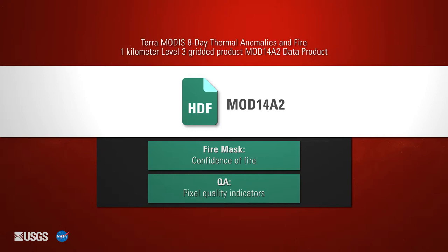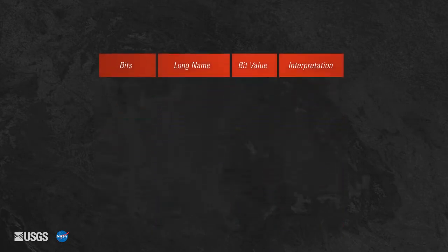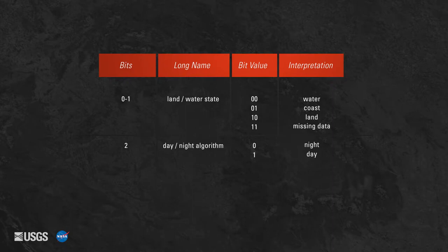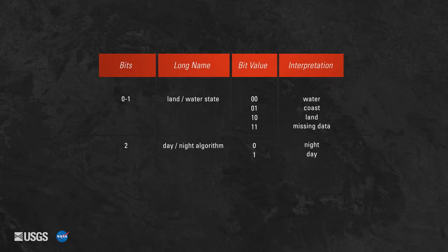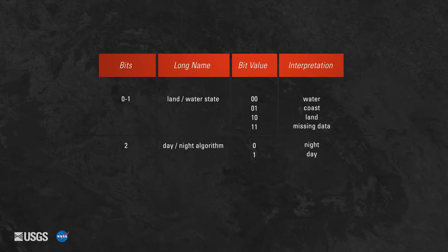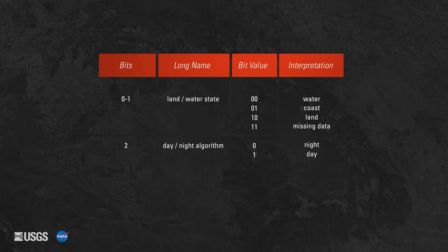The information extracted from this quality layer can be used to filter data based on different levels of quality. Each MOD14 Thermal Anomalies and Fire product contains one Quality Assurance or QA layer. The QA layer contains pixel-level Quality Assurance information. When QA data values are decoded, they provide information on the state of the pixel — whether an observation is over land, water, or coast, as well as whether the pixel value is a day or night observation.